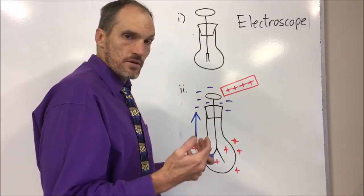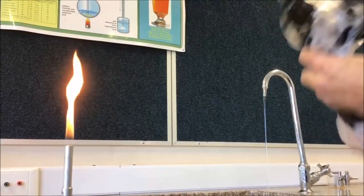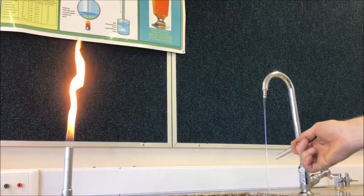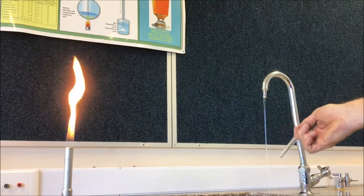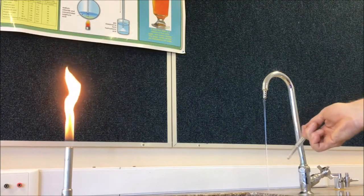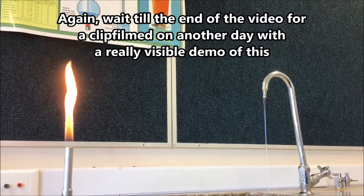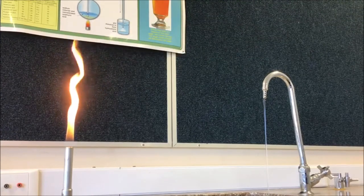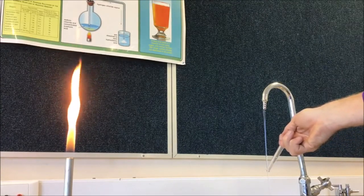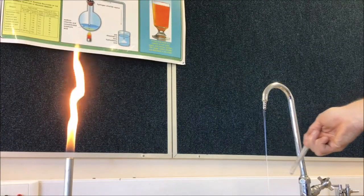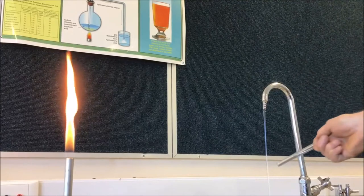Now let's move on and talk about what happened with the stream of water — charging by triboelectric charging. You can see again, with a force of attraction, we can bend the stream of water using the charged rod, creating a force of attraction. Remember, water molecules are polar and they will orientate themselves so that they are attracted to it. You're going to see we can manipulate the stream of water — there we go.